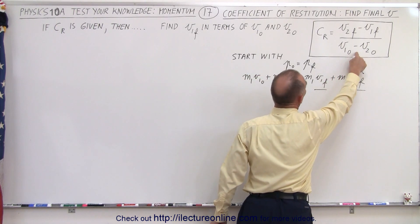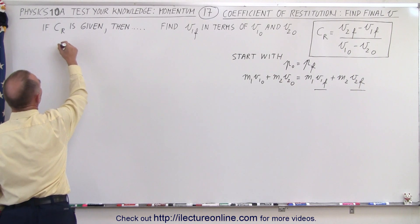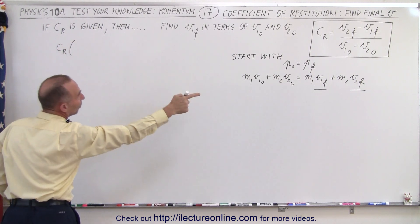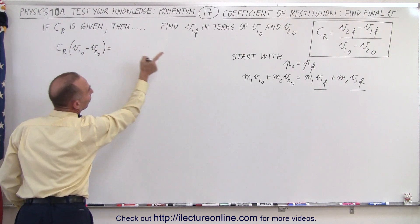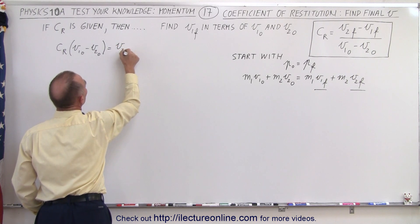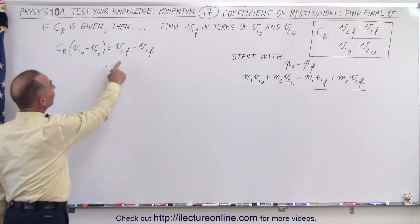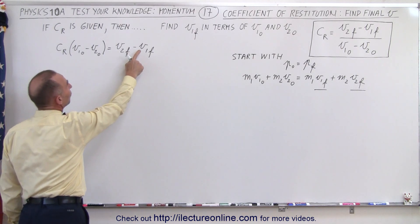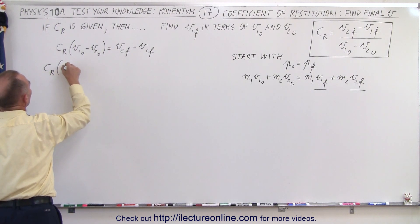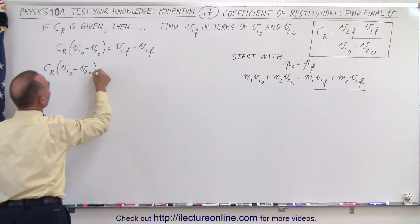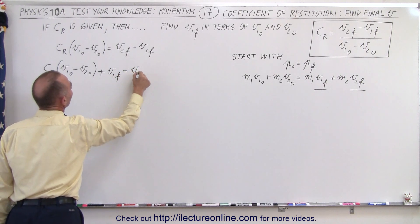What we're going to do is solve this equation for v2 final. We can say that the coefficient of restitution times the denominator — which is v1 initial minus v2 initial — must equal the numerator, which is v2 final minus v1 final. Moving v1 final to the other side, it becomes plus, giving us: coefficient of restitution times (v1 initial minus v2 initial) plus v1 final equals v2 final.